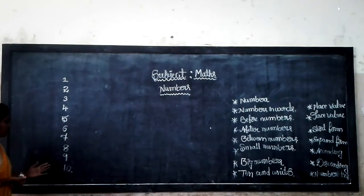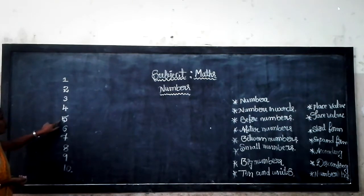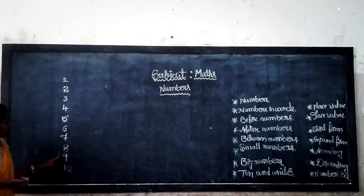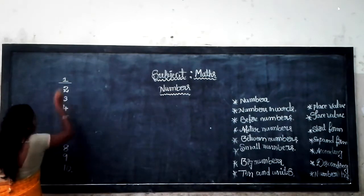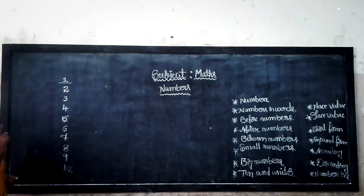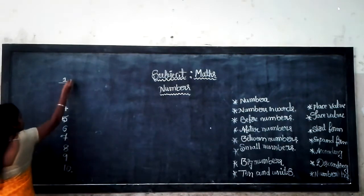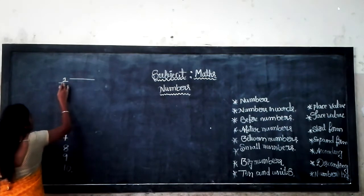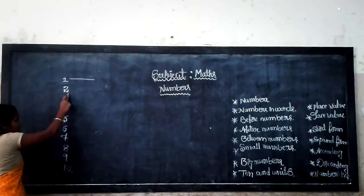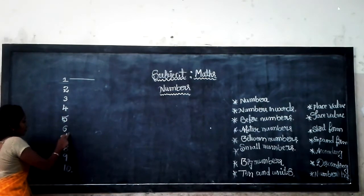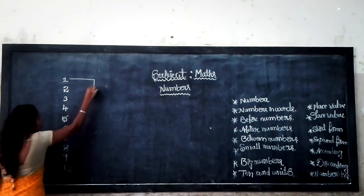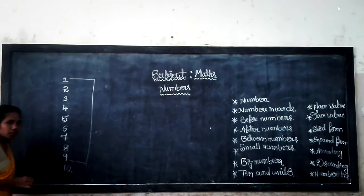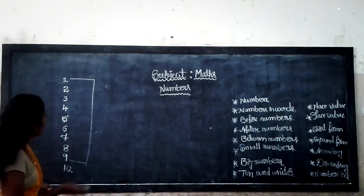Also these numbers: 1, 2, 3, 4, 5, 6, 7, 8, 9, 10. Now, which numbers are single-digit numbers? Can you find them? In number 1, there is only 1 digit — there is no other number. So 1 is a single-digit number. 2 is also a single-digit number. 3, 4, 5, 6, 7, 8, 9 — from 1 to 9, these are single-digit numbers.